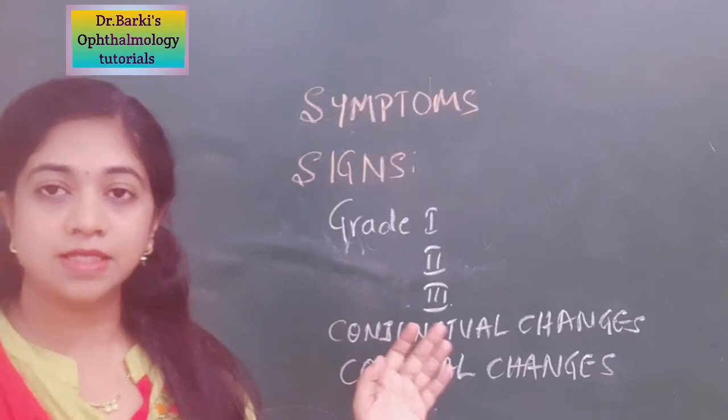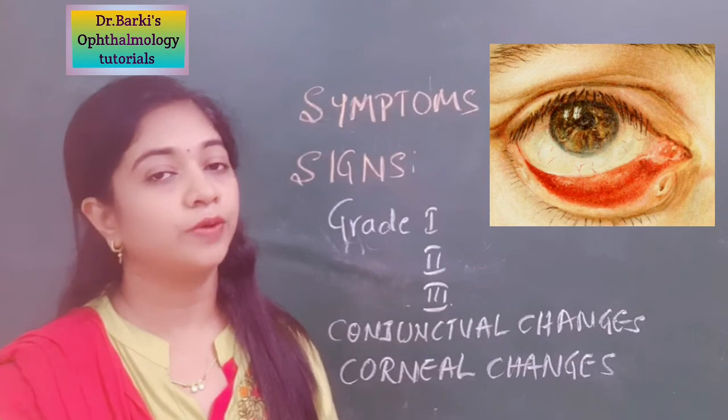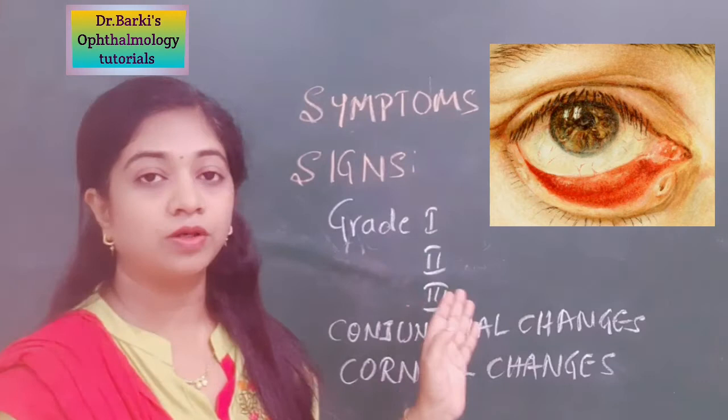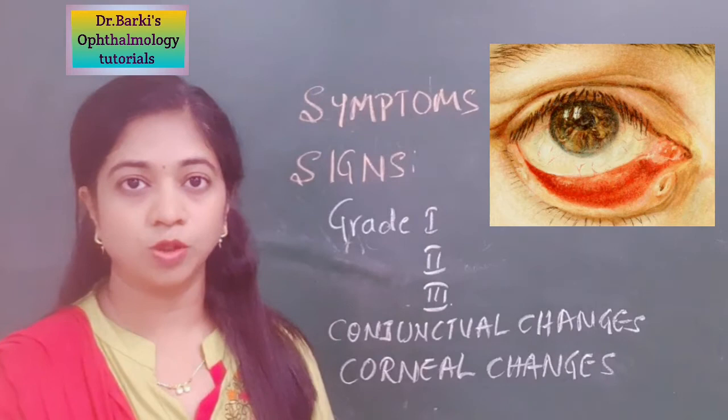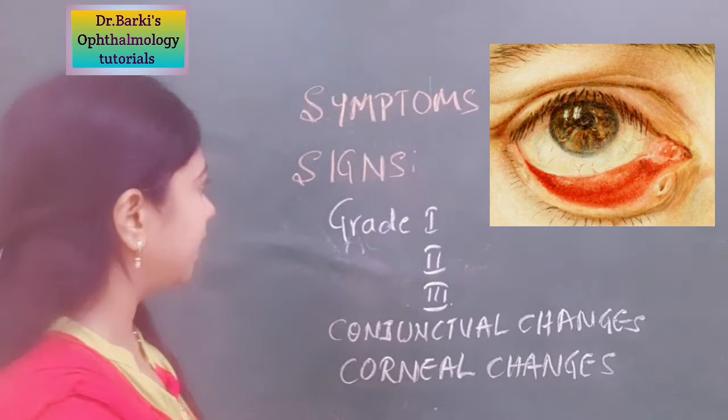When you examine the patient, what are the signs you elicit? There is obvious ectropion but that depends upon the grade. In grade 1 ectropion, when you ask the patient to look up, you can appreciate that the punctum is not opposing the globe. In grade 2 ectropion, when the patient is looking straight in the primary position, the punctum is not opposed to the globe — there is eversion of the punctum. In grade 3, the whole of the lid along with the palpebral conjunctiva and even the forniceal conjunctiva can be seen out.